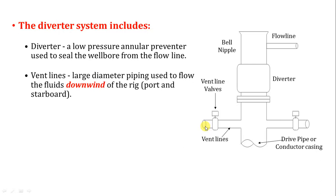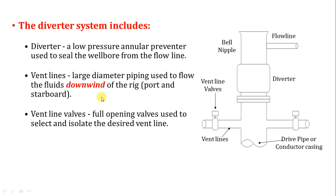The vent lines must also be provided with an automatic igniting system. So there are three main properties for the diverter vent lines: number one, large size; number two, must be straight; number three, must have an automatic igniting system — not someone manually making fire, because that could burn them. All of these are exam questions in the IWCF.